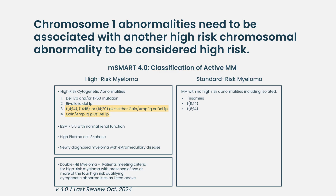In June 2025, the International Myeloma Working Group published a consensus statement on defining high-risk genetics in myeloma. In the new guidelines, 1Q abnormalities need to occur alongside translocation 4;14, 4;16, or 14;20, or with a monoallelic deletion of 1P, to be considered high risk.